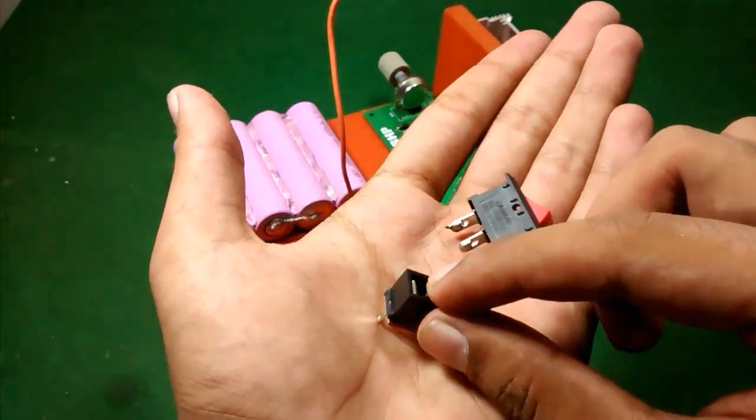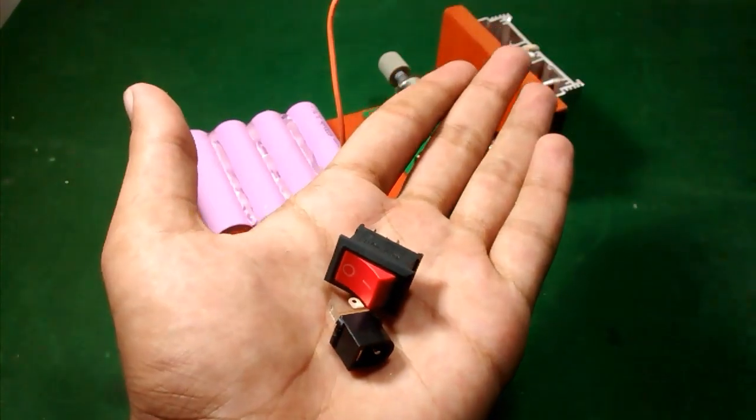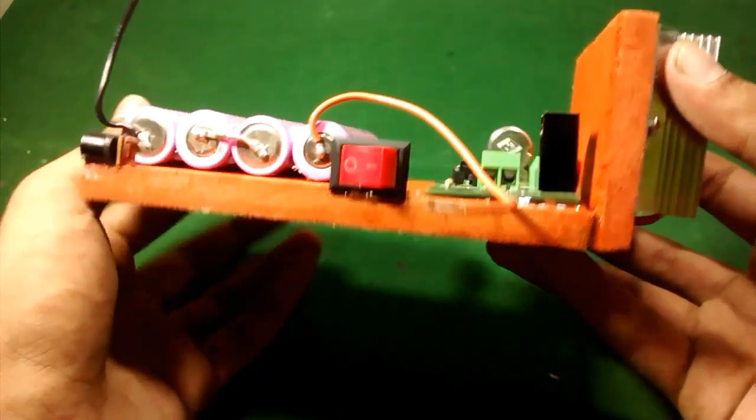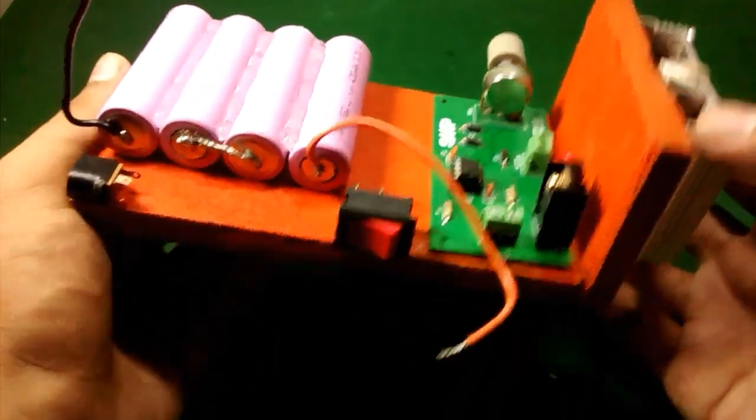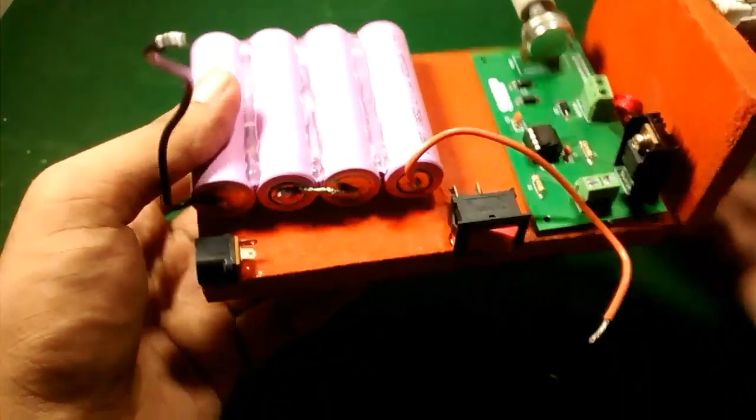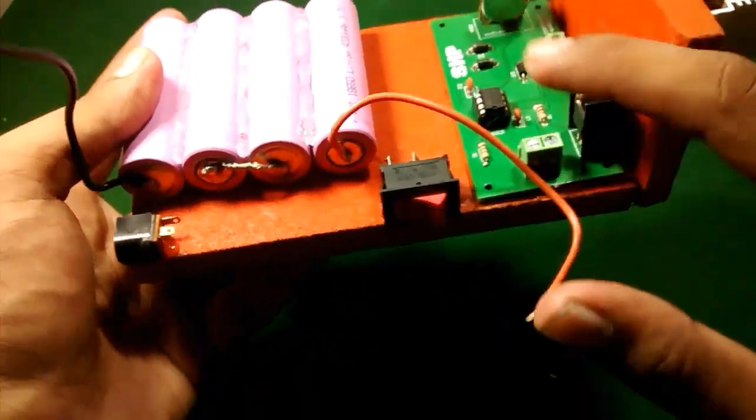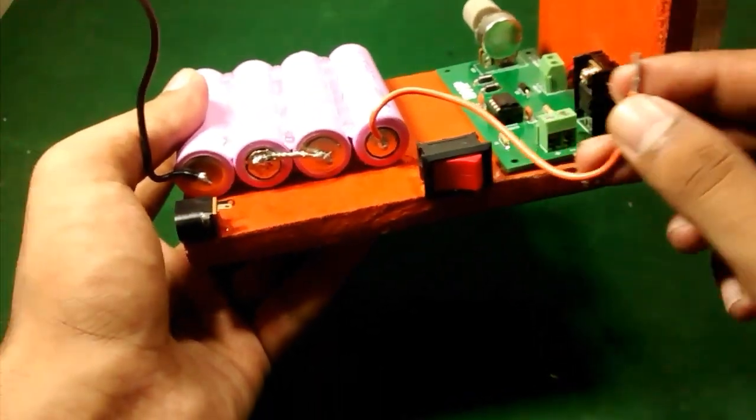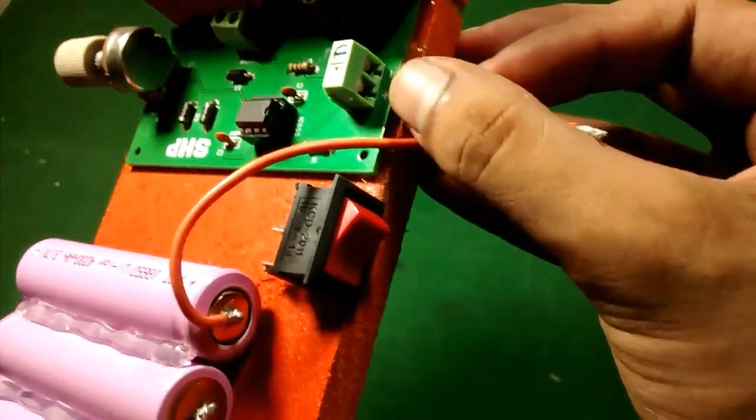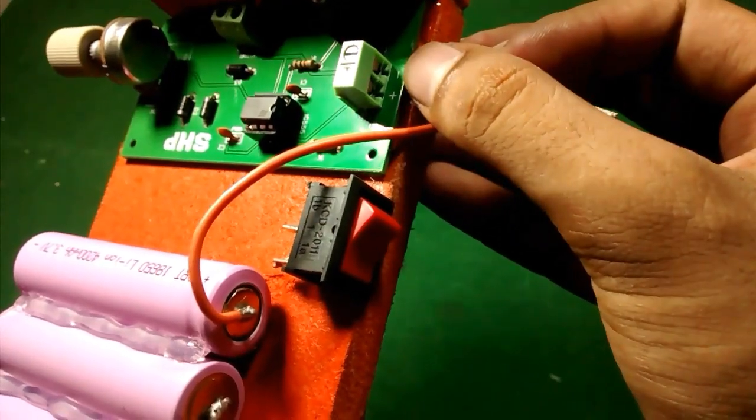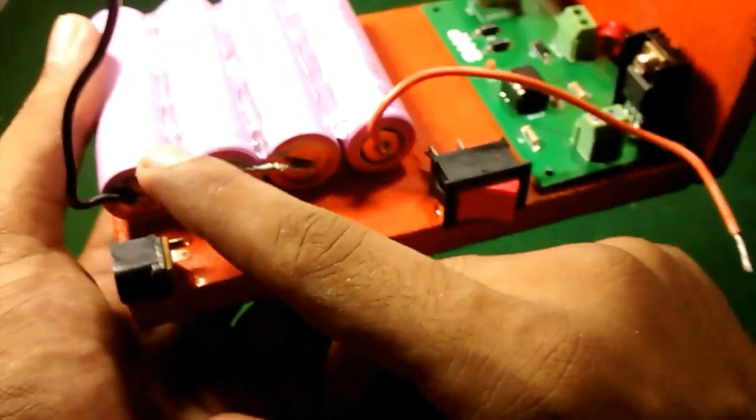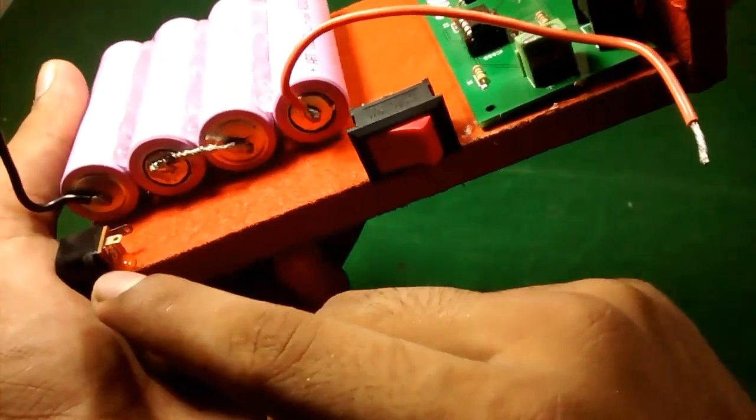And now I am going to glue this jack and the switch. And now, friends, I am going to complete the soldering process. I am going to connect the negative of the battery to the switch, and then from the switch to the controller, and the positive directly to the controller. Here you can see the terminals, and then I will connect the negative and positive of the battery to this DC jack.